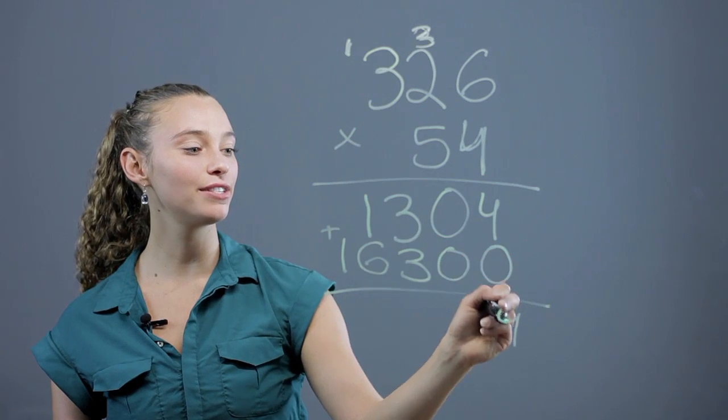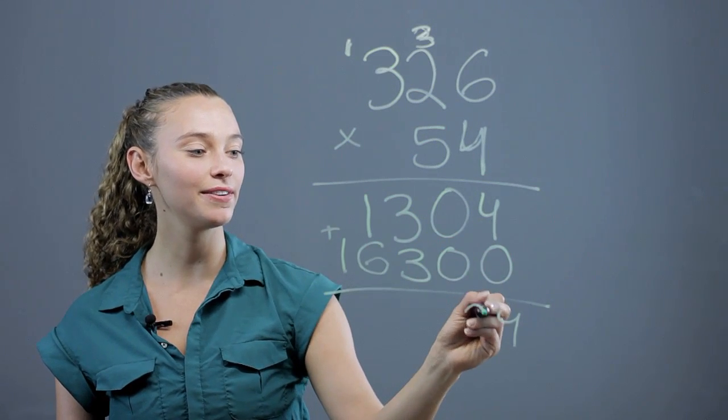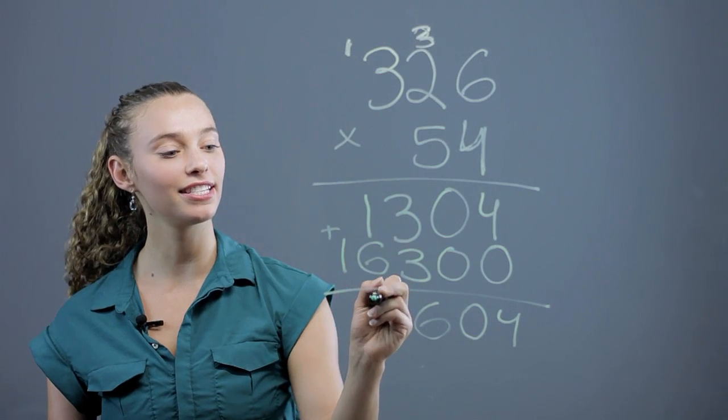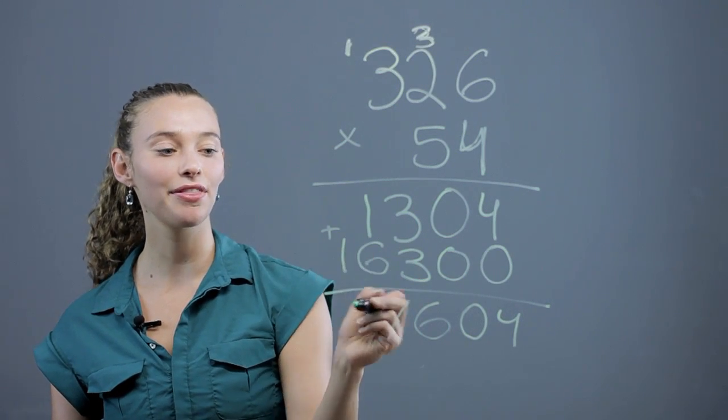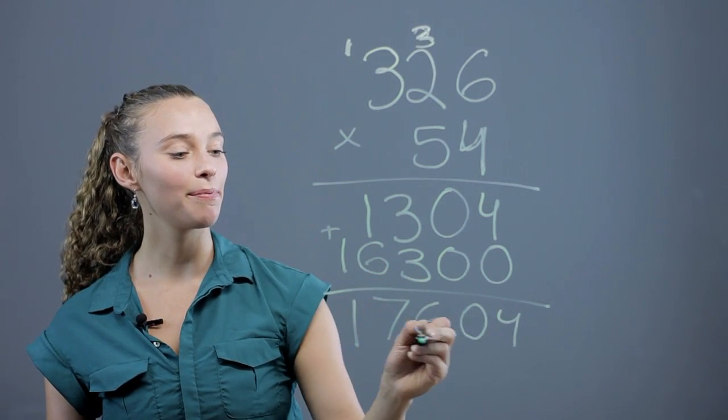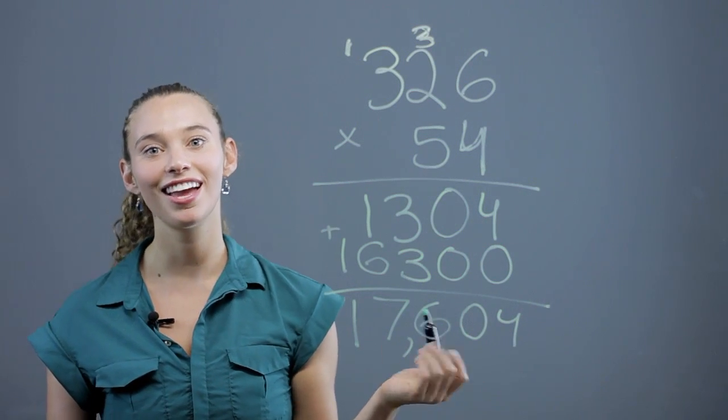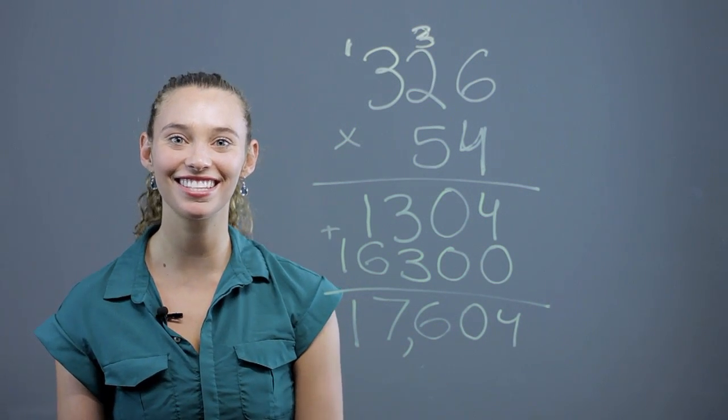You get 4 plus 0 is 4. 0 plus 0 is 0. 3 plus 3 is 6. 1 plus 6 is 7. And carry down the 1. You end up with 17,604 as your answer. I'm Rachel, and thanks for learning with us today.